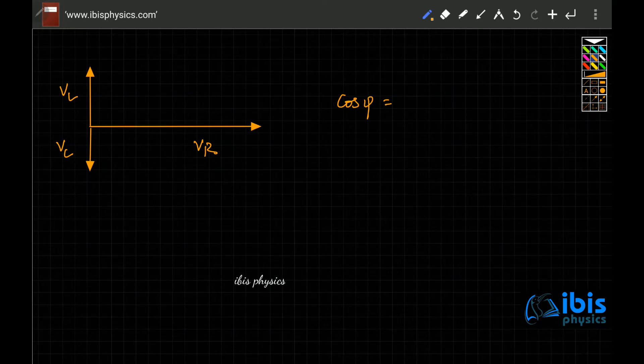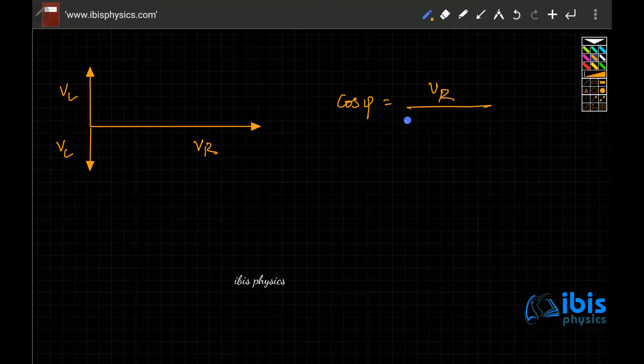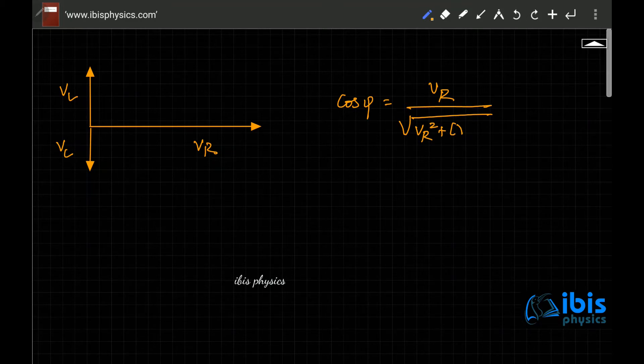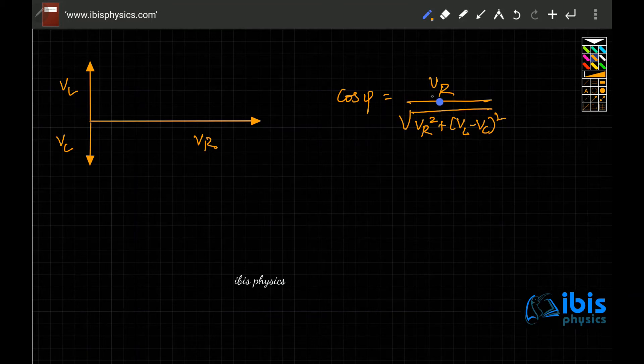The total phase of the EMF with respect to current is equal. The net phase of the EMF with respect to current is always either VR by root over VR square plus VL minus VC the whole square. Either this is one form.